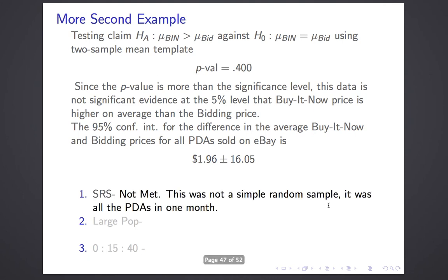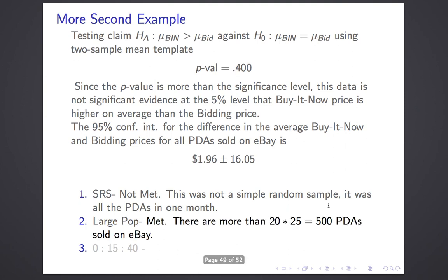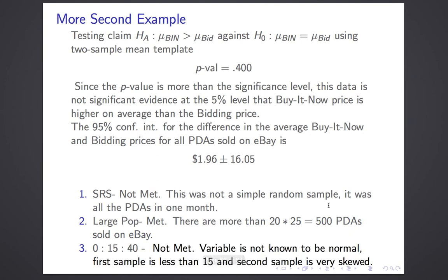Is it a simple random sample? No — it was all the PDAs sold in one month, so it's a convenience sample. Large population? At the time there were presumably more than 500 PDAs sold on eBay, so yes. The 0-15-40 rule: not met. We don't know the variable is normal, the first sample was less than 15, and the second sample — just over 15 — had a very skewed histogram. So we fail to meet that assumption.